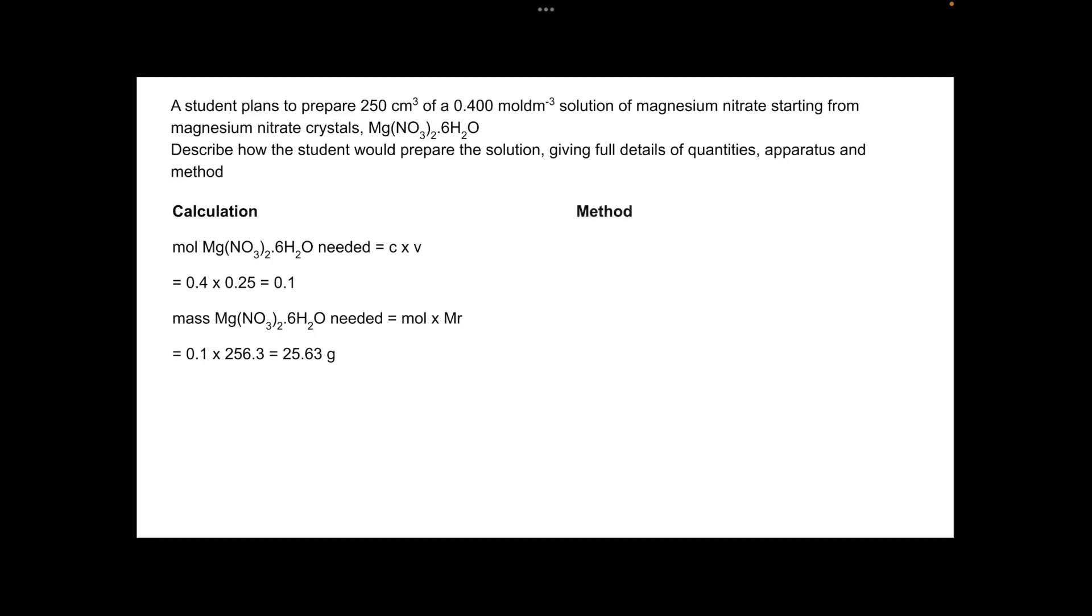So moving on to the method. First thing you would do is using a two decimal place balance—really important that you mention that because you've worked out 25.63 grams—you'd weigh out that mass of crystals. Normally that would be done in a small beaker.